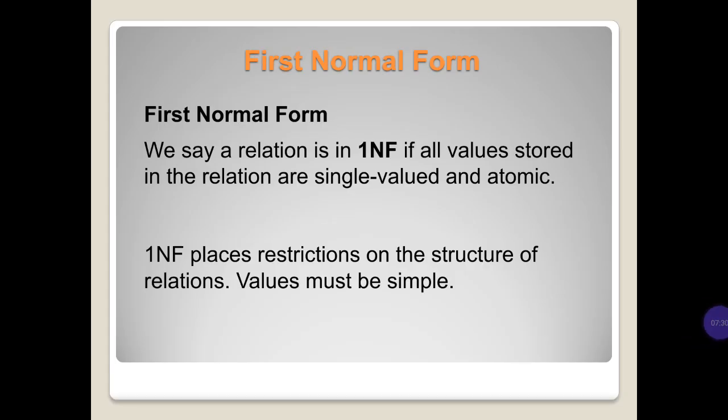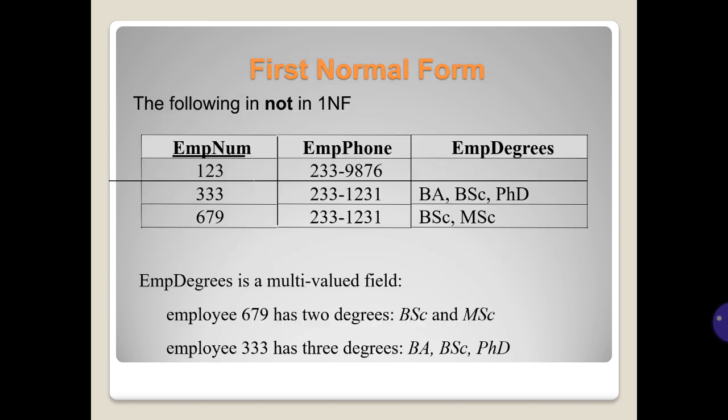First normal form: we say a relation is in 1NF if all values stored in the relation are single-valued and atomic. 1NF places restrictions on the structure of relations — values must be simple. For example, the following is not in 1NF: InvNum, InvPhone, and InvDegrees. InvDegrees is a multi-valued field. Employee 379 has 2 degrees: BS and MS. Employee 333 has 3 degrees: BA, BS, and PhD.